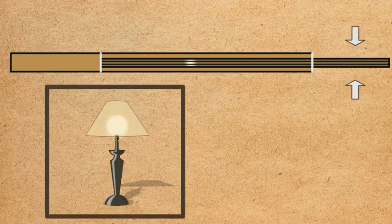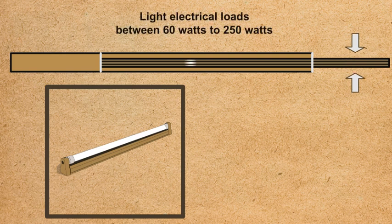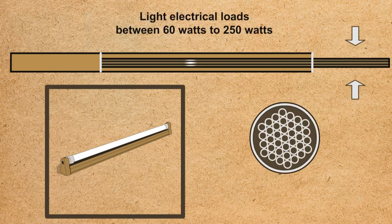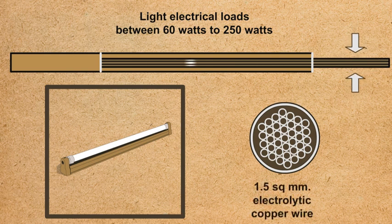Appliances like bulbs, fans, tubes carry loads between 60 and 250 watts and require 1.5 square millimeter electrolytic copper wire.